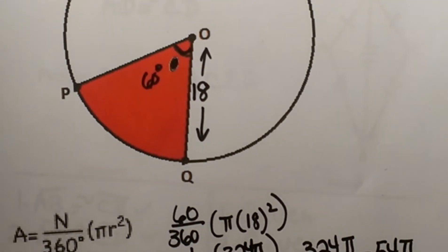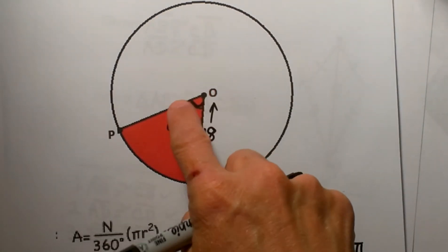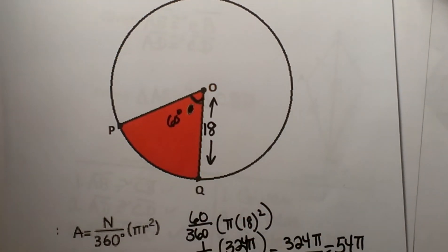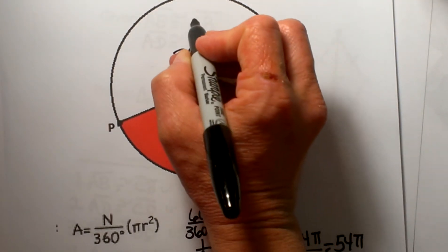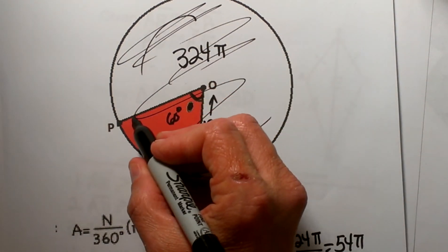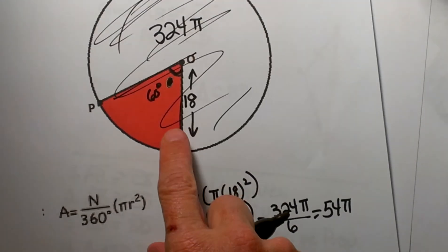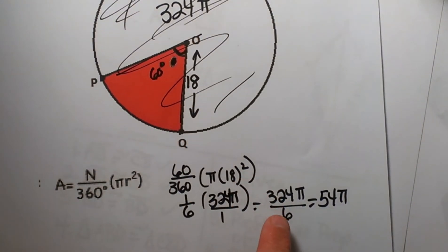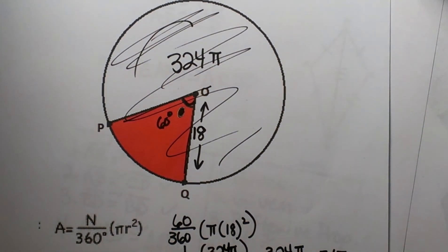So in this problem we can see that we have one sixth of the area of the circle. The area of the entire circle is 324 pi. That would encompass all of it. But we only want a fraction of it, so we multiply by the fraction, which we get by taking the angle measure out of the whole circle, and we know the circle has 360 degrees. And that is how you figure out sector area. Thank you.